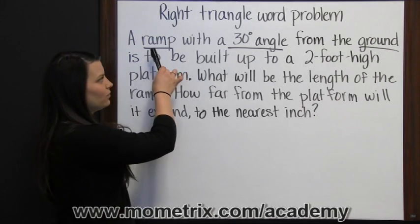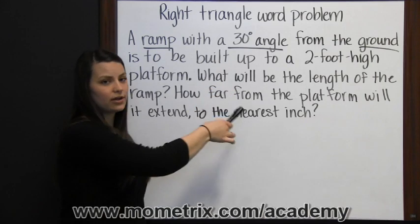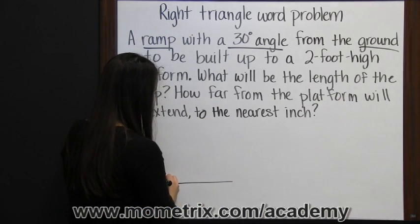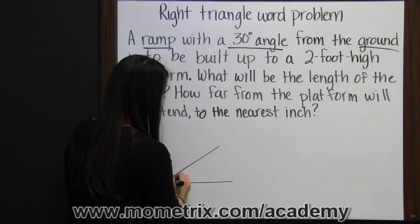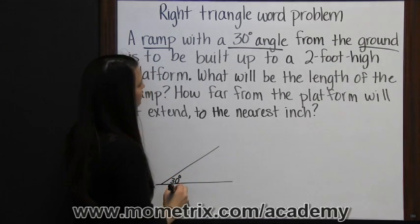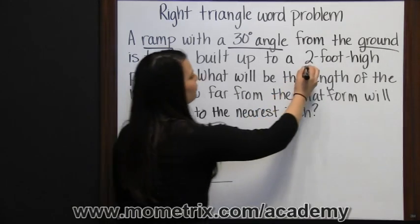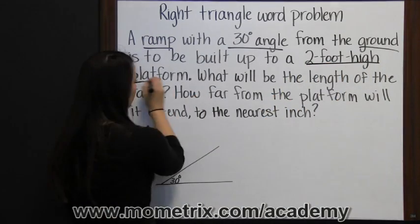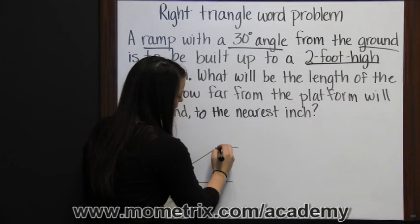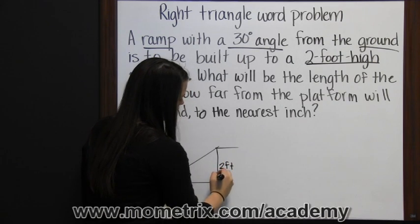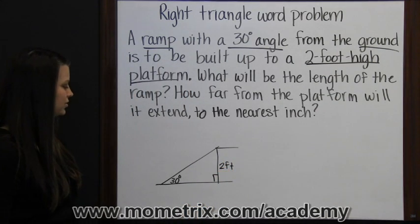So we have a ramp that makes a 30 degree angle with the ground, so let's start with that. Here's the ground, here's our 30 degree angle, and it's to be built up to a 2 foot high platform. So then here we have a platform and it's 2 feet high above the ground. There's a right angle there, perpendicular to the ground.